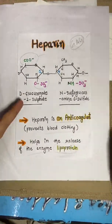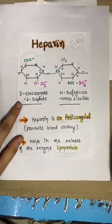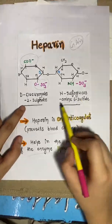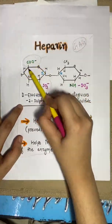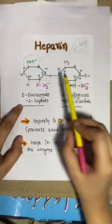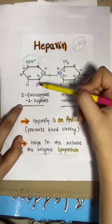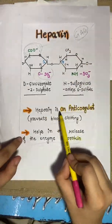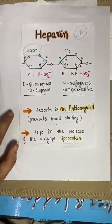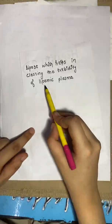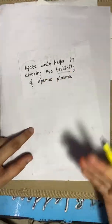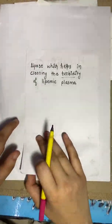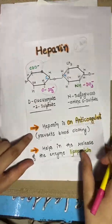The third GAG is heparin. Its structure consists of D-glucuronate 2-sulfate and N-sulfo-glucosamine 6-sulfate as its disaccharide unit. Sulfate, carboxyl, and amino groups are present, giving it acidic properties. Heparin is an anticoagulant which prevents blood clotting. It also helps in releasing the enzyme lipoprotein lipase, which clears lipemic plasma by reducing turbidity.